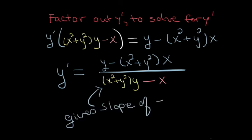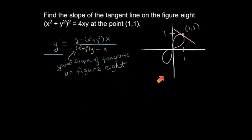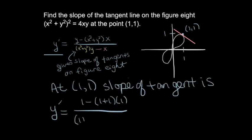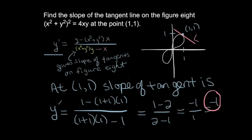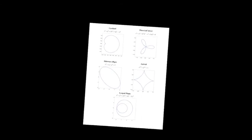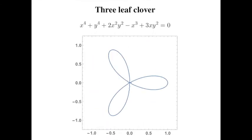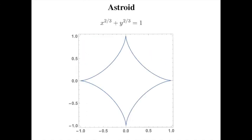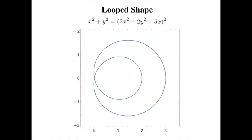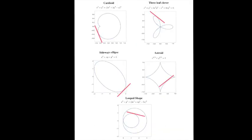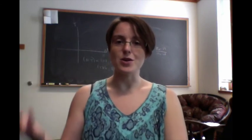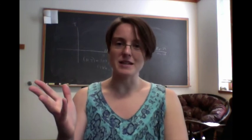This formula gives the slope of the tangent lines on the figure eight. To find the slope at one comma one, plug in x equals 1 and y equals 1. The result is negative one — that's the slope of the tangent line at that point. There are many cool shapes that come from implicit equations: a cardioid, a three-leaf clover, a sideways ellipse, an asteroid, and loop-within-a-loop shapes. Now you can find the slope of the tangent line on any of these curves using implicit differentiation.